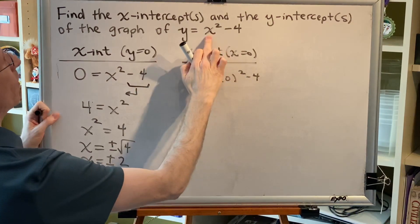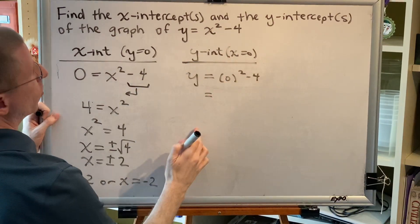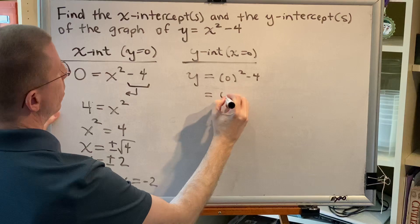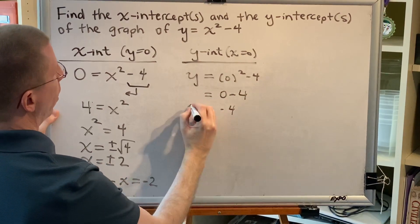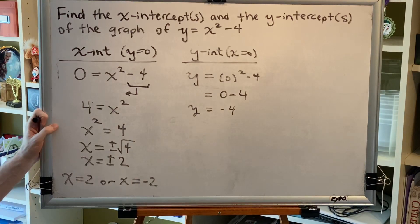Because the thing I'm replacing has an exponent, I will use parentheses. 0 squared is 0. 0 minus 4 is negative 4. So I get the y-intercept negative 4.